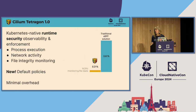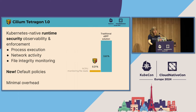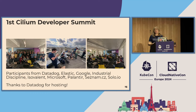The 1.0 release of Tetragon has a really nice graph showing how low the performance overhead is, even compared to other eBPF-based solutions, because of the fact that we can filter inside the kernel. Another thing that happened this week was our first ever in-person Cilium developer summit. We had participants — active committers and developers from eight or nine different companies. Big thanks to Datadog for hosting us in their beautiful offices in Paris.